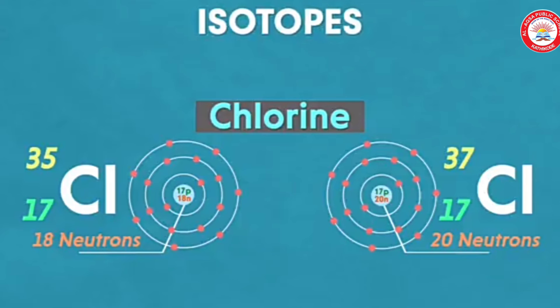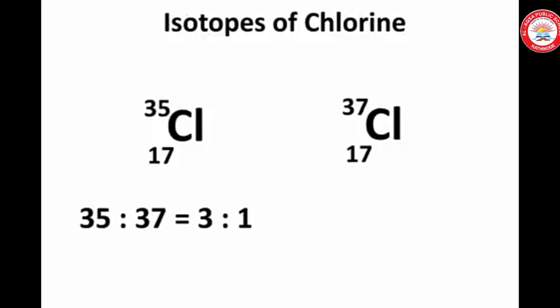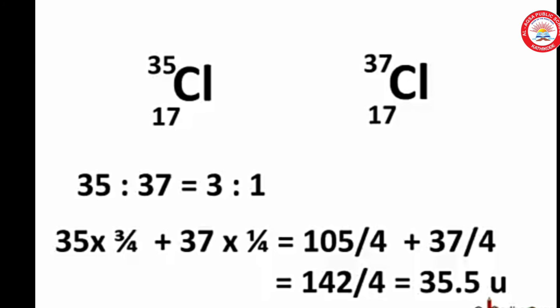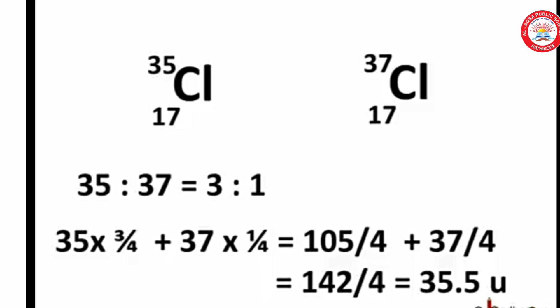If an element occurs in isotopic forms, the mass of an atom, we have to take the average mass of the isotopic forms. For example, we have said that chlorine has two isotopic forms with masses 35 and 37 in the ratio 3 is to 1. So, the average atomic mass of chlorine atom, we have to calculate like this and we will get the average mass of chlorine as 35.5U.